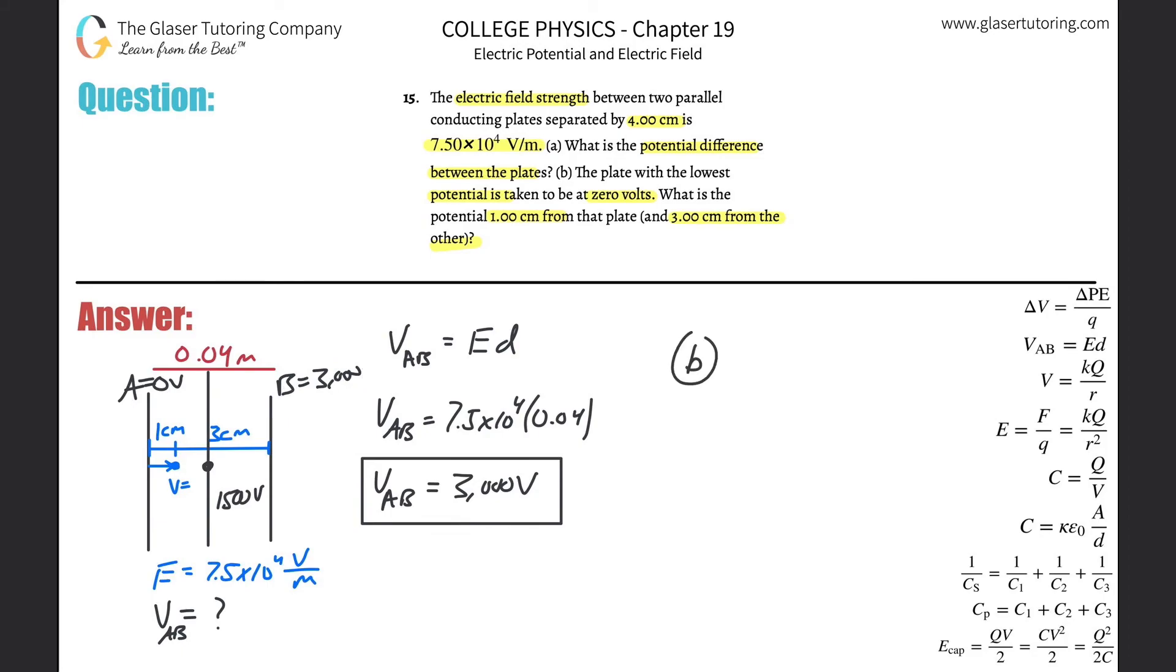So it'd basically be, for letter B, it'd be one-fourth of the 3,000. And what does that turn out to be? So one-fourth of 3,000, so 3,000 times one divided by four, 750. And that should hopefully make sense. 750 volts, right?